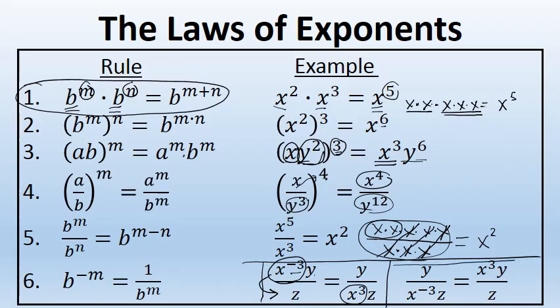On the other hand, if we have y over x to the negative 3 z — if something in a denominator has a negative exponent, it moves to the numerator. Once it moves to the numerator, the exponent becomes positive. The y and the z did not have a negative exponent, so they stayed where they were. y over x to the negative third z equals x to the third in the numerator times y, all over z.